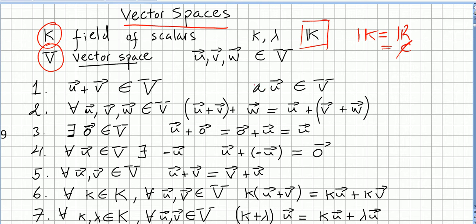Number one: a vector space should be closed under vector addition. So for all u and v in the vector space, if you add them — for all u and v in V, if you add u and v — the result should be in the vector space. This is called closed under vector addition.